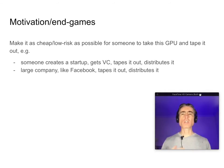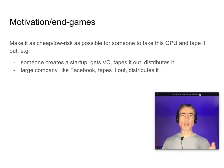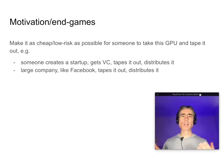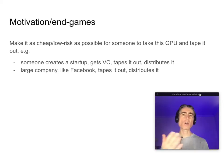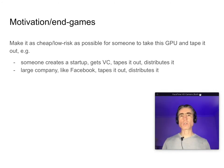There are two possible ways forward. One is someone creates a startup, gets VC, tapes it out and distributes it. Another is a large company like Facebook could tape it out and distribute it. Why might Facebook do that? Well, that creates an alternative to Google's TPU, for example.